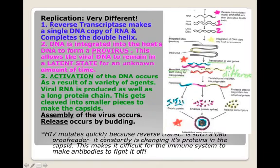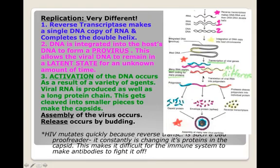HIV mutates quickly because reverse transcriptase is such a bad proofreader — it's constantly changing its proteins in the capsid. Consider how many errors are made going from RNA to DNA, then DNA to the complementary strand, then back out of the DNA to make multiple RNA copies to form the polyprotein. This makes it difficult for the human immune system to make antibodies to fight it off — one virus might go in and the viruses that come out are genetically different. This is why we've been unable to synthesize any vaccine that can prevent you from getting sick from HIV.